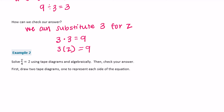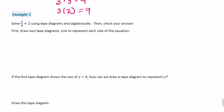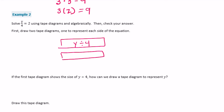Example 2. Solve y over 4 — that means y divided by 4 — is equal to 2, using tape diagrams and algebraically. Then check your answer. First, draw two tape diagrams, one to represent each side of the equation. The first one is y divided by 4, and the second one represents 2. Whatever y divided by 4 is, it is equal to 2.